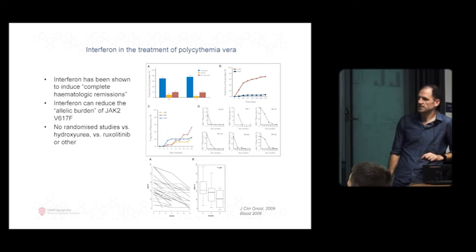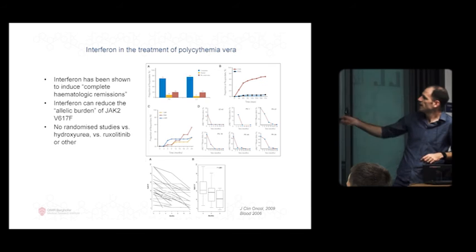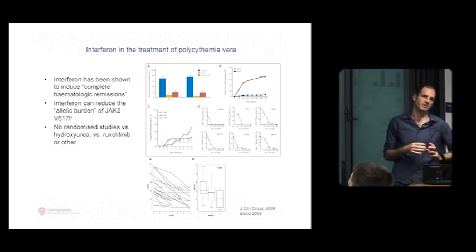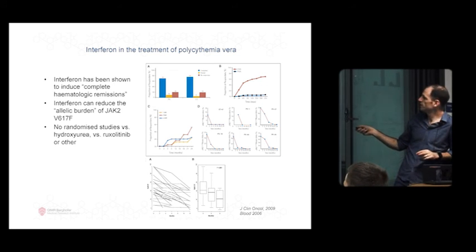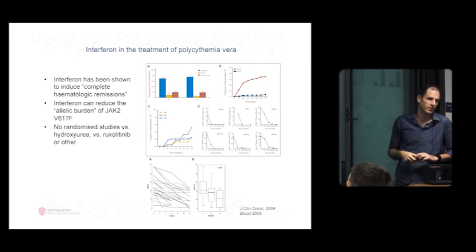This is some pictures from interferon studies. This is a polycythemia vera study, this is an ET study - pegylated interferon. You can see 70% and 80% of patients have a complete hematologic response, which means all the blood counts go back completely to normal. This shows you over time how that happens - you need at least three months and certainly 6 to 12 months before you can really be confident that it's going to work or not.